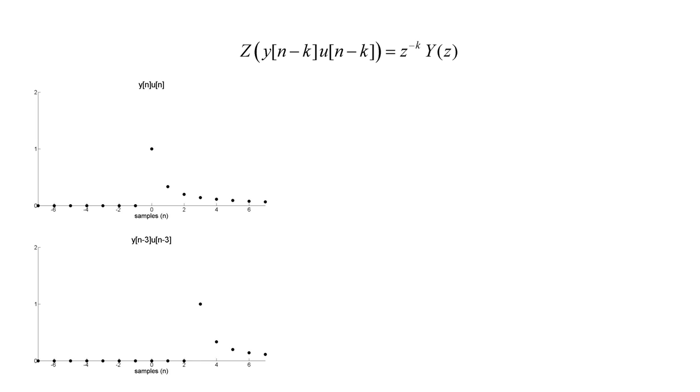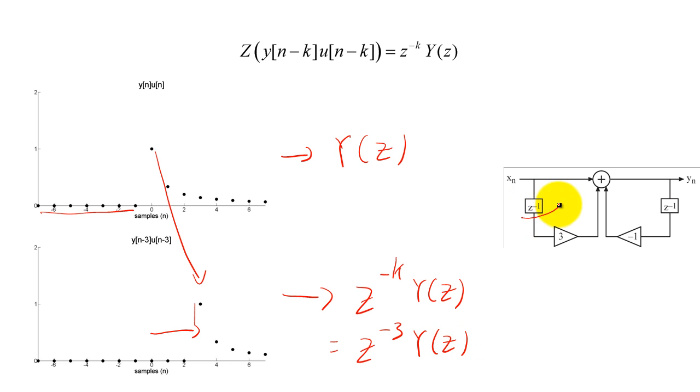If we assume that our sequence Y of n was truncated to be 0 for negative values, then if we delay Y of n by k, we find that the Z-Transform is simply multiplied by Z^(-k). Since Z^(-k) corresponds to a delay of k samples, we use the convention of Z^(-1) to represent a delay of one sample in our filters.